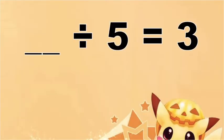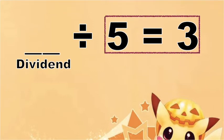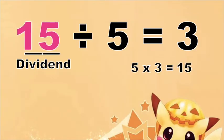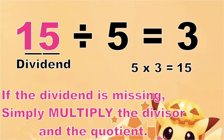How about if I have this: blank divided by 5 is equal to 3. Since our dividend is missing, what are we going to do to find it? Very good! We are going to multiply 5 and 3. So 5 times 3, that is equal to what? Good job! That is 15. So our dividend is equal to 15. Always remember, if the dividend is missing, all you need to do is to multiply the divisor and the quotient.